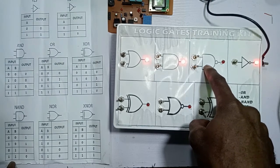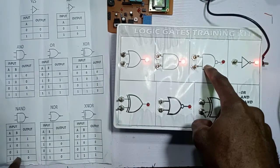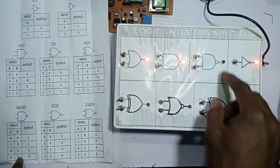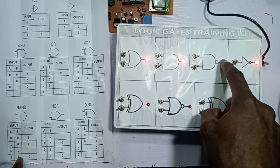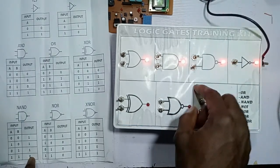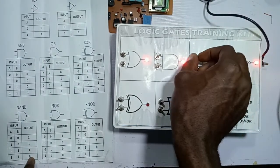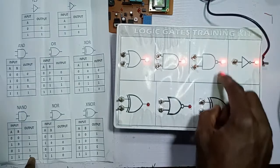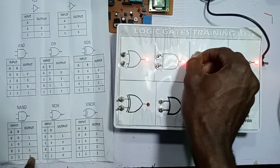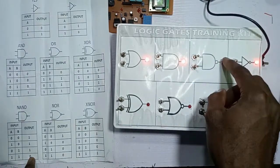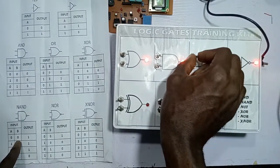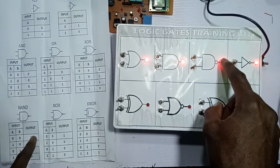For the NAND gate, the output is always one unless we have one one as the input. Now I have one one as input, that's why it's zero. Now this is one zero — so the output is one. This is one one, which is why it's zero. For zero zero, I have one.